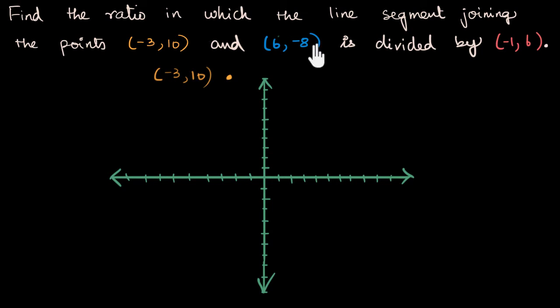Where is (6, -8) going to be? Counting: 1, 2, 3, 4, 5, 6 on the x-axis, and -1, -2, -3, -4, -5, -6, -7, -8 on the y-axis. That's approximately where that's going to be. So (6, -8).